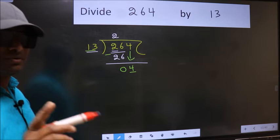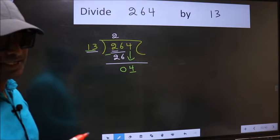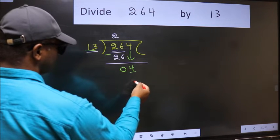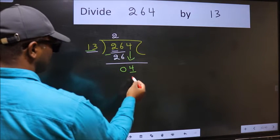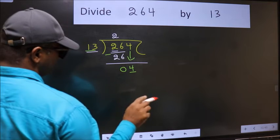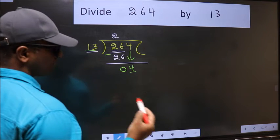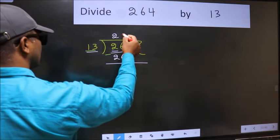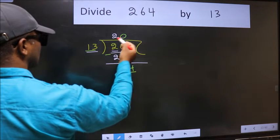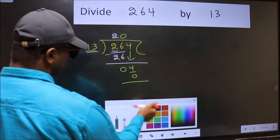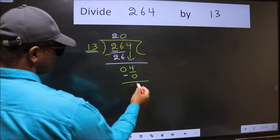Instead, what you should think of doing is which number should we take here. If I take 1, we will get 13, but 13 is larger than 4. So what we should do is we should take 0. So 13 into 0, 0. Now we should subtract. 4 minus 0, 4.